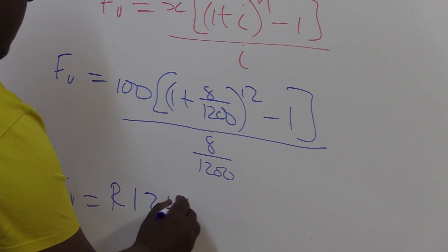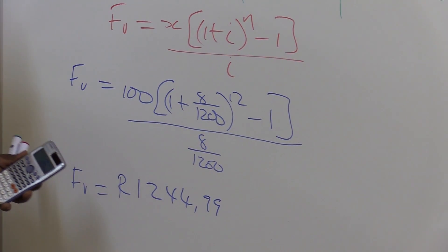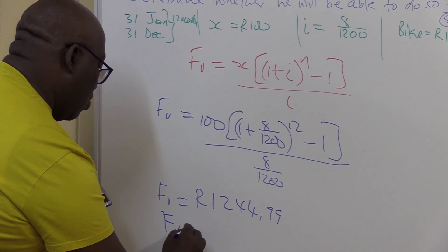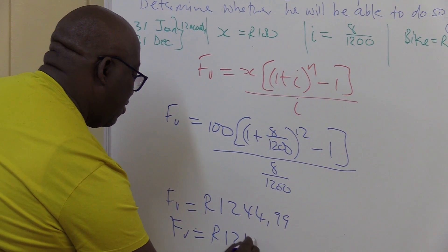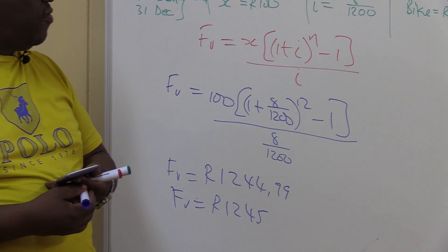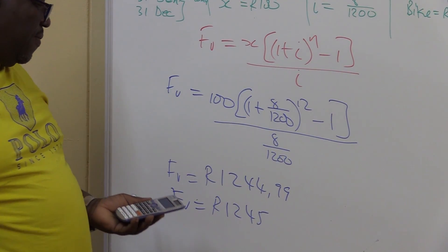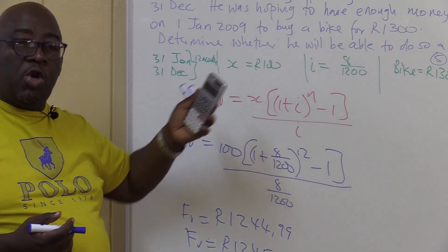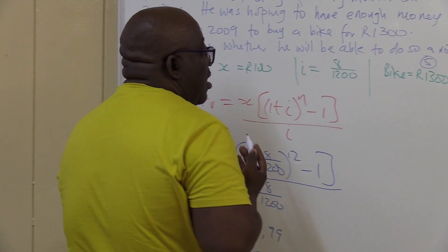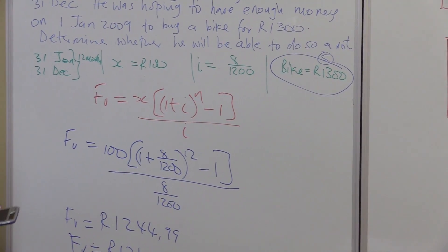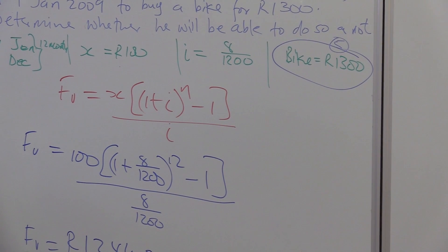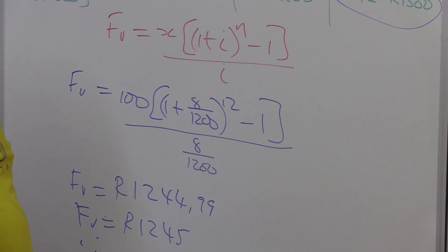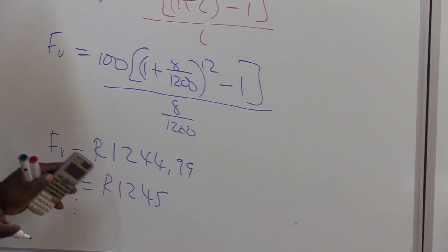Now, if you've got double nines or three nines, you are allowed to round up one unit. So FV = 1,245 rand. That's the amount he'll be able to save over 12 months putting aside 100 rand. Now, the question is: determine whether he will be able to buy the bike or not. The bike costs 1,300 rand. Since 1,245 is less than 1,300, Farouk will not be able to buy the bike — he is short by a certain amount.